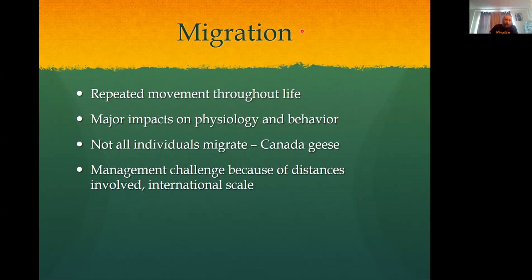The problem with migration, different from problems with dispersal where it's tough to identify individuals, is that these distances are usually so long that they often cross state and/or federal boundaries. We've talked about monarch butterflies — they cross the border between the United States and Mexico. Trying to manage across a federal border is nothing short of a nightmare.